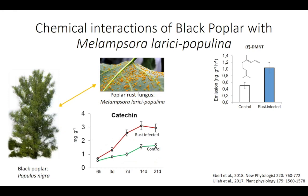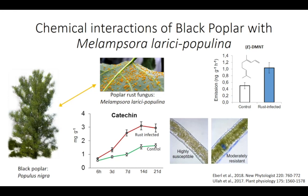Phenolics, especially condensed tannins and their subunit catechin, increase quite dramatically in poplar leaves upon rust infection. Interestingly, by staining leaves from different commercial varieties for tannins, we could show that the amount of catechin and condensed tannins in a poplar leaf correlates with its resistance to the rust fungus.